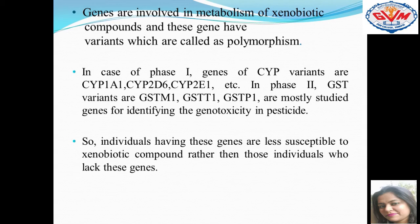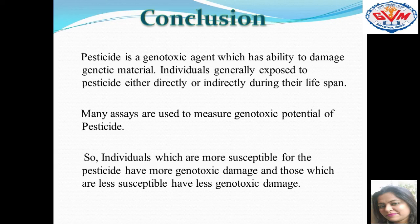In conclusion, pesticide is a genotoxic agent with the ability to damage our genetic material. Individuals are generally exposed to pesticides either directly or indirectly during their lifespan. We can measure the genotoxic potential of pesticides through biomarkers of exposure and effect. The individual's genetic makeup is very important: if it is more susceptible, it will cause more genotoxic damage; if it is less susceptible, it will cause less genotoxic damage. Thank you.